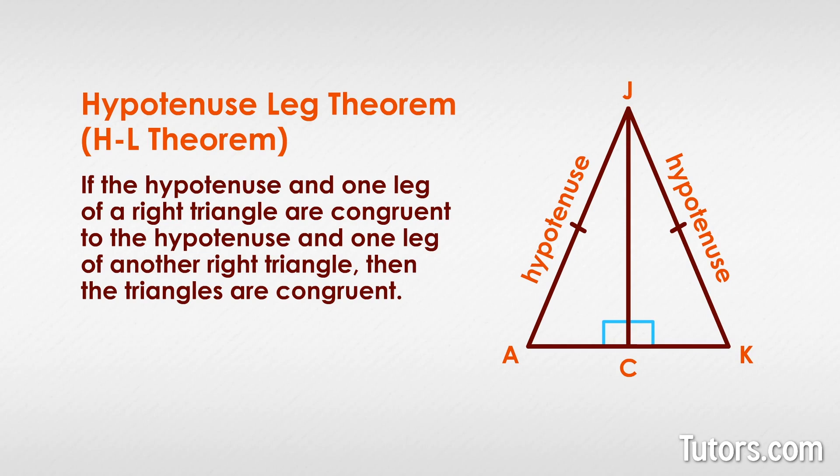We know by the reflexive property that side JC of triangle JAC is congruent to JC of triangle JKC. And we know that the two hypotenuses, which began our proof as equal length legs of an isosceles triangle, are congruent. So now we have one leg and a hypotenuse of triangle JAC, congruent to the corresponding leg and hypotenuse of triangle JCK.